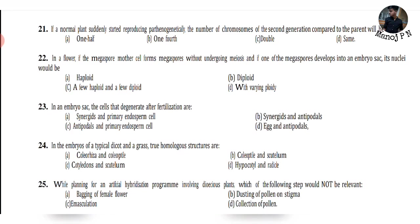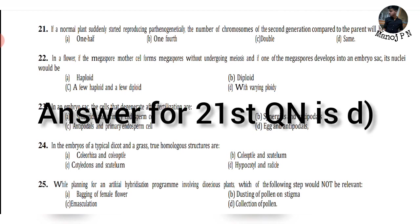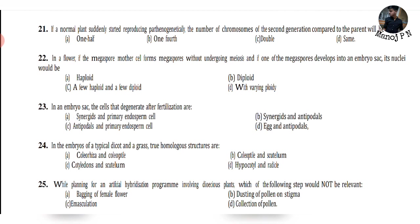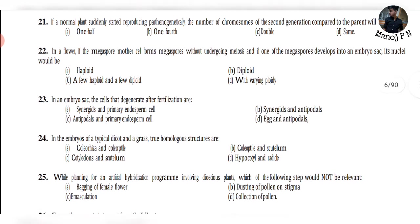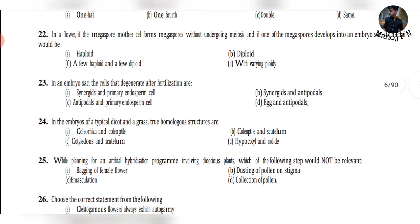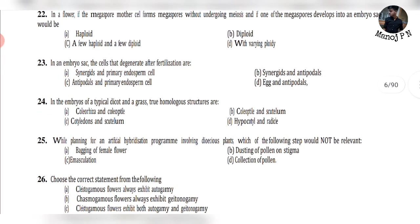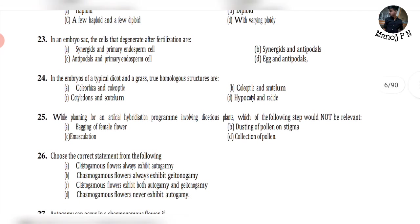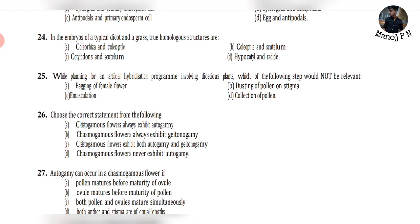Question 22: In a flower, if the megaspore mother cell forms megaspores without undergoing meiosis and one of the megaspores develops into an embryo sac, the result is varying ploidy — direct answer. Question 23: In an embryo sac, the cells that degenerate after fertilization are antipodals and primary endosperm cells.